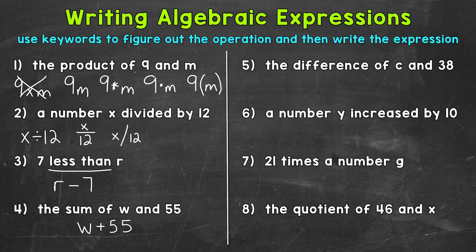On to number five, where we have the difference of C and 38. So our keyword difference, well, that's the answer to a subtraction problem. So this is going to be subtraction, C minus 38. So in the case of that subtraction algebraic expression, we keep the order C first, 38 second, as opposed to number three, where we switch that order. That's because we had that less than. So pay attention to wording when it comes to these algebraic expressions.